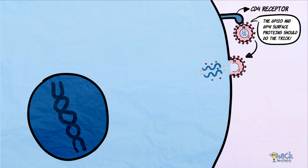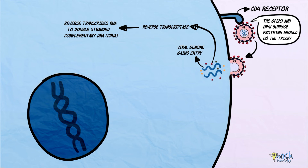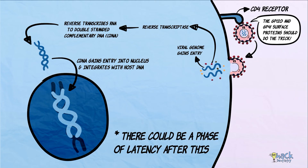Once attachment is successful, the viral RNA or genome gains entry into the cytoplasm of the host cell. Inside the cell, the viral genome undergoes reverse transcription via its reverse transcriptase enzyme, synthesizing double-stranded complementary DNA. This complementary DNA then gains entry into the host nucleus and integrates itself with the CD4+ T cell's DNA. The integrated viral genome then goes into a phase of latency.